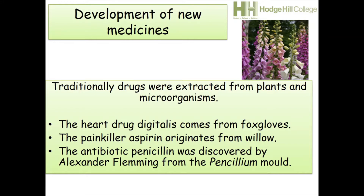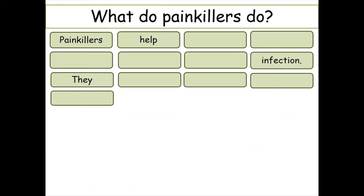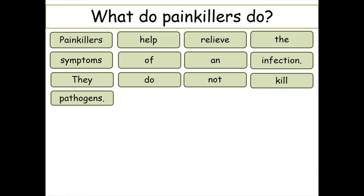Painkillers help relieve the symptoms of an infection — they do not kill pathogens. So if you've got a headache, they relieve your headache, but they won't kill the bacteria or viruses; they just help you feel better. Two examples you should know are paracetamol and ibuprofen — the most common ones you'll find at home.